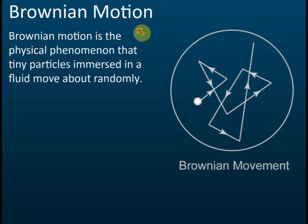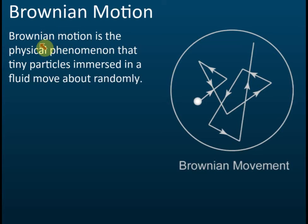The second proof of particle theories of matter is Brownian motion. This experiment was done by a scientist called Robert Brown.